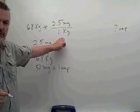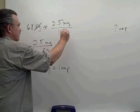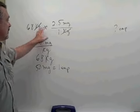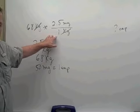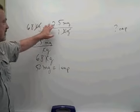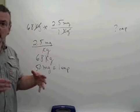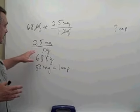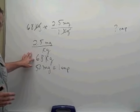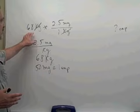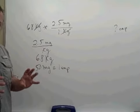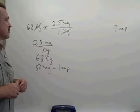Putting this conversion fraction in, the kilograms that are related to the patient's weight cancel. And if we simply did the arithmetic that is here, 68 times 2.5, we would calculate the total milligrams of drug this particular patient should receive. 68 kilograms times 2.5 milligrams per kilogram would give us the total milligrams this patient should receive.